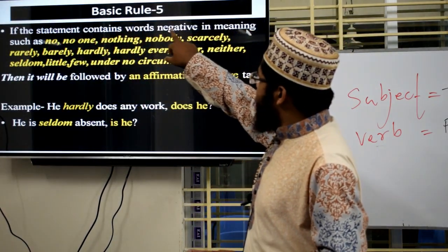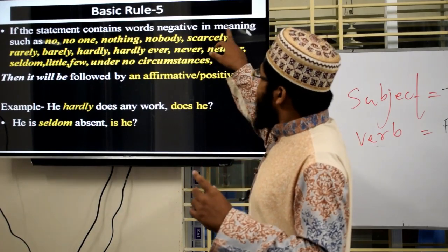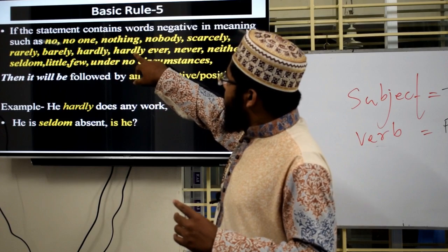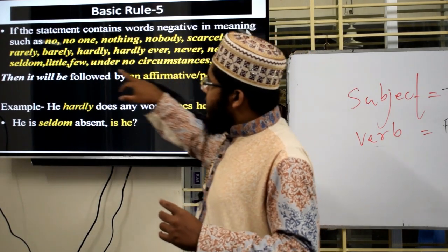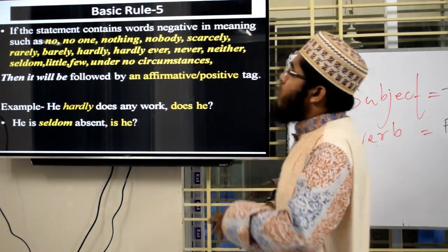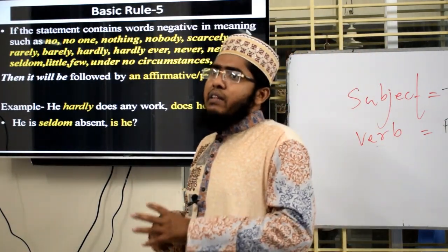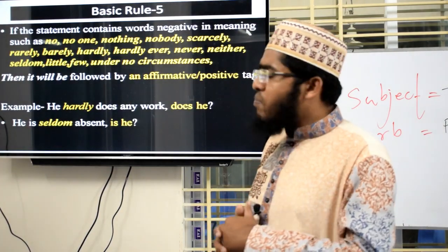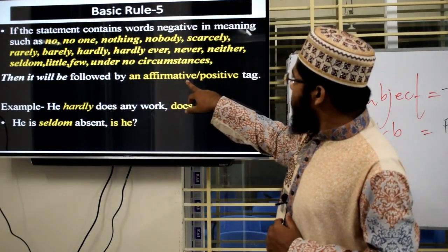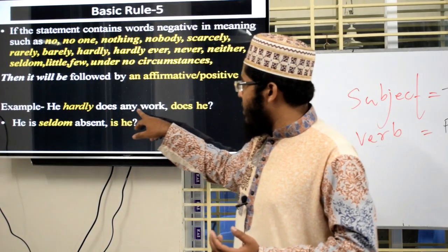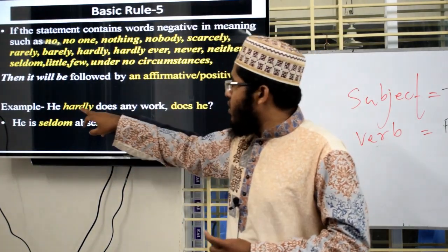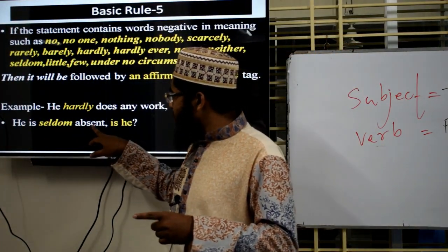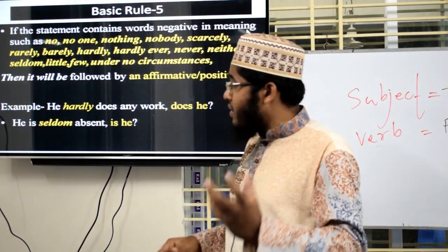If the statement contains words negative in meaning — such as: no, no one, nothing, nobody, rarely, barely, hardly, never, neither, seldom, little, few, under no circumstances — remember these words contain negative meanings. That's why the question tag must be positive interrogative — an affirmative tag. Example: 'He hardly does any work.' The word 'hardly' gives negative meaning, so the tag is 'does he?' Another example: 'He is seldom absent.' We have 'seldom', which is negative in meaning, so the tag is 'is he?'